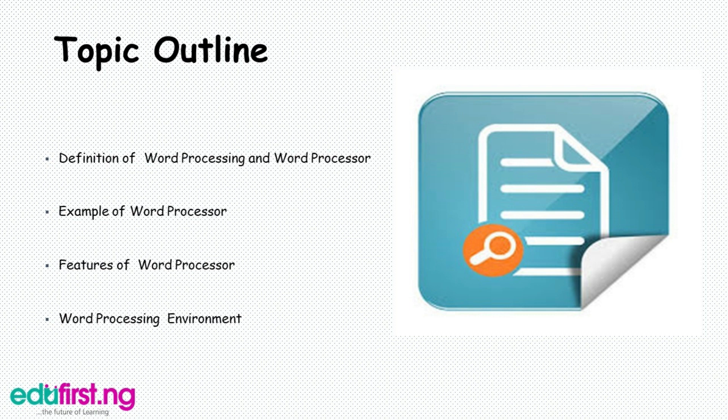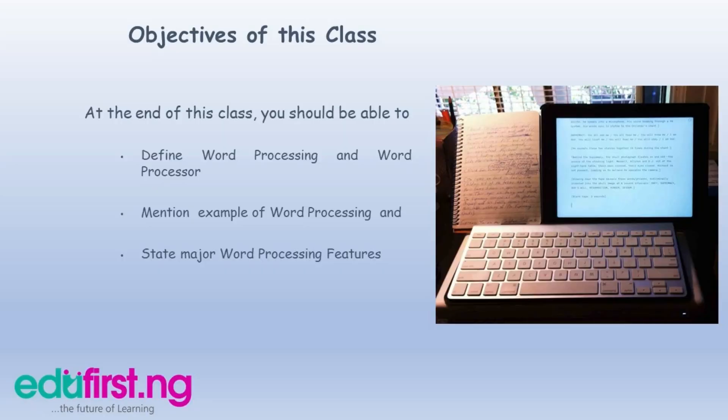Our topic outline covers: definition of word processing and word processor, examples of word processors, features of word processors, and word processing environments. The objectives of this class are to define word processing and word processor, mention examples of word processing, and state major word processing features.